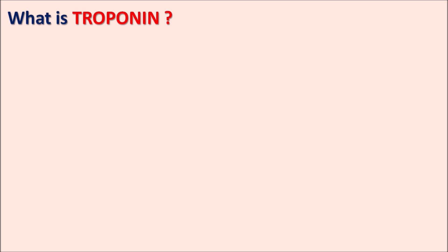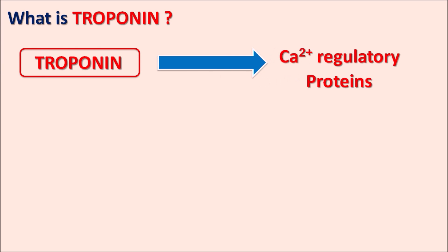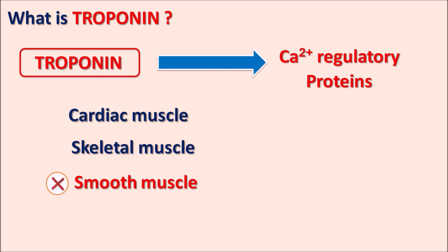What is troponin? Troponin acts as a cardiac biomarker, and in case of any cardiac damage, troponin levels are elevated within the blood. Troponin is one of the important components in the cardiac muscle and it belongs to the family of calcium regulatory proteins. Troponin is present in cardiac muscle as well as skeletal muscle, but it is not present in smooth muscle. Within cardiac and skeletal muscle, troponin forms a complex with calcium and is therefore responsible for contraction of the muscle.